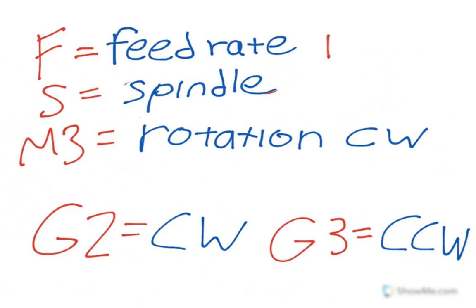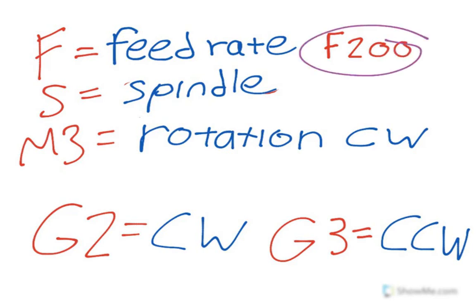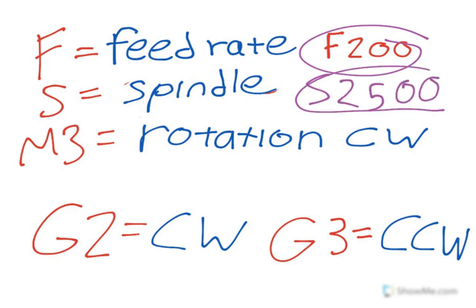The F is going to be followed by a few numbers, such as F200 that we're going to be using. The spindle speed we're going to be setting to 2500. Don't worry about actually knowing these speeds just yet, because we'll cover that in another section. Just know that we will have to set the feed rate and the spindle, as well as the rotation of the tool we're going to be using.